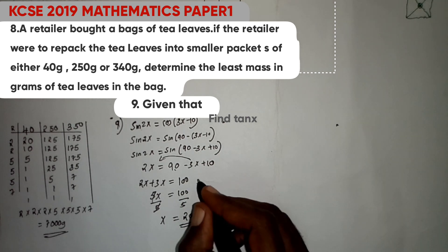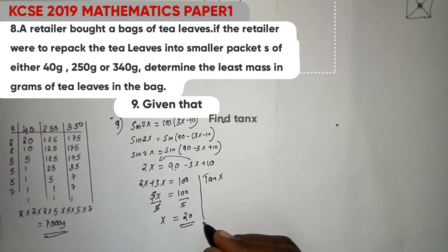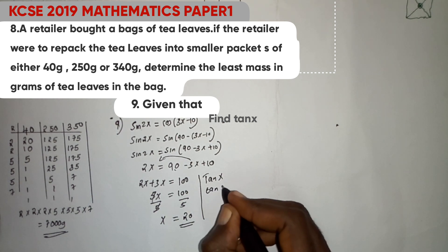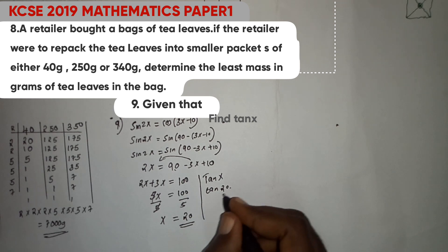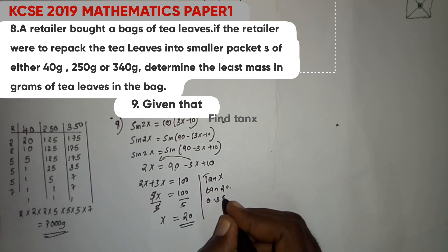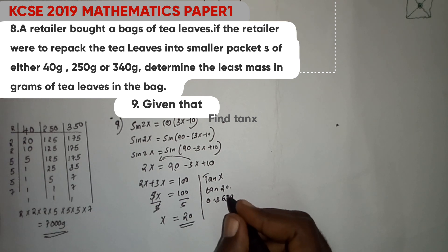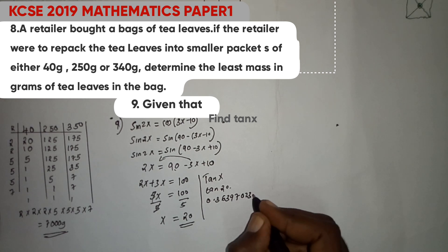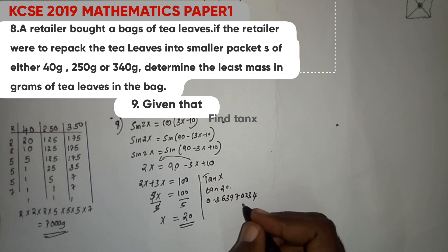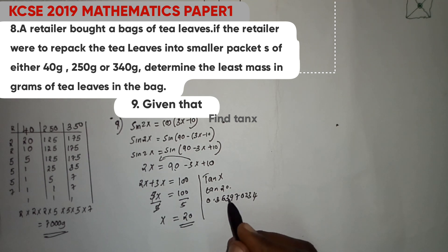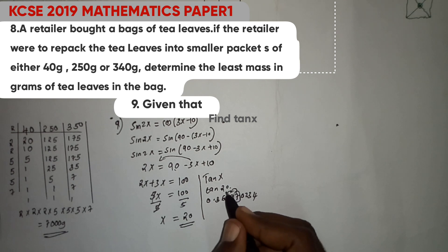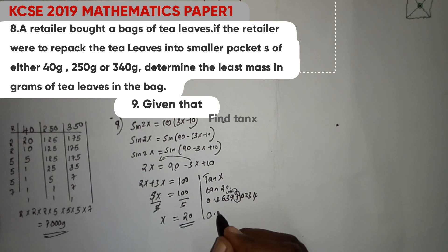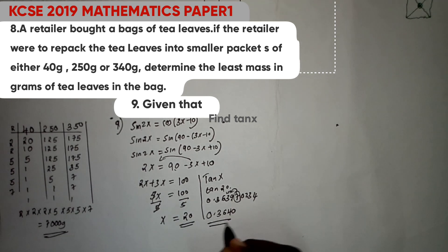We were told to find tan x, where x equals 20 degrees. Therefore we find tan 20. Using a calculator, tan 20 equals 0.363970234. Correcting to four significant figures: we look at the fifth digit, which is 7 — since 7 is greater than 5, we round up, giving 0.3640. Therefore tan 20 degrees equals 0.3640.